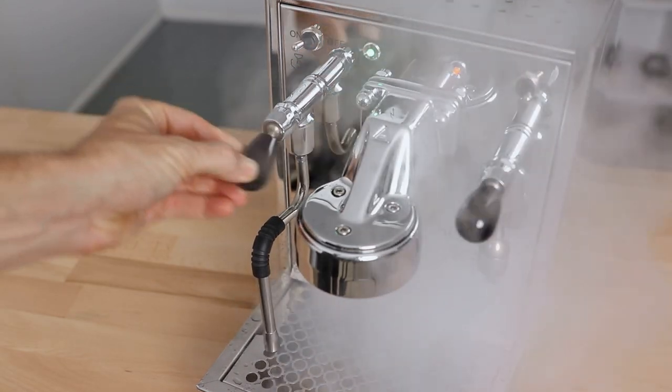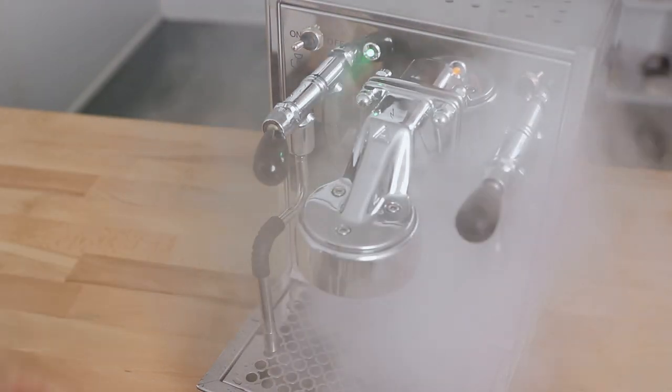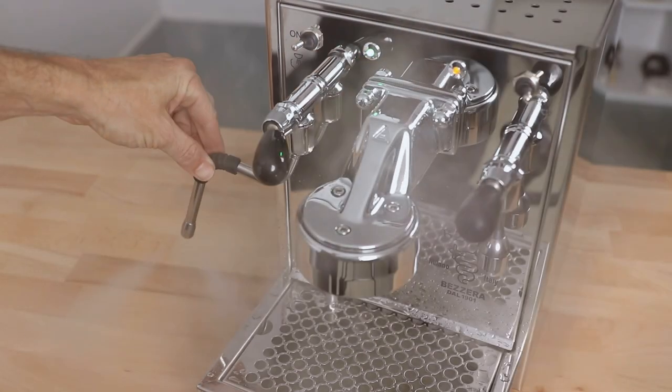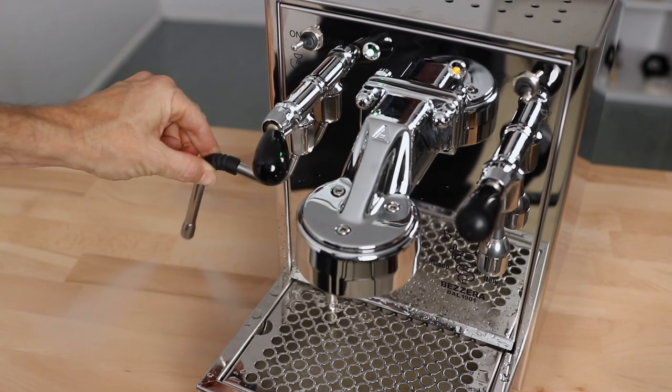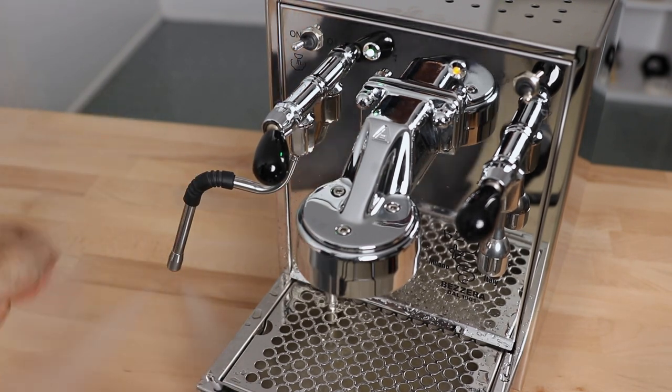Next you have that 360 degree and lockable any which way steam tap with plenty of steam power behind it and a steam wand that's on a ball joint so you can move it into any position.